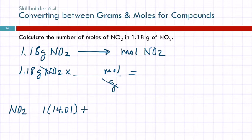There is one mole of nitrogen in a mole of this compound. One mole of nitrogen weighs 14.01 grams. There are two moles of oxygen, and each mole of oxygen weighs 16 grams. So 14.01 plus 2 times 16, 46.01. Grams of NO2 is equal to one mole.